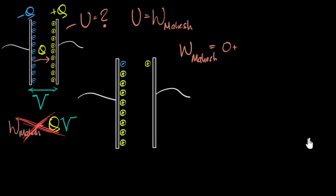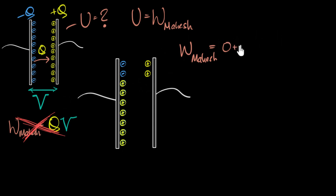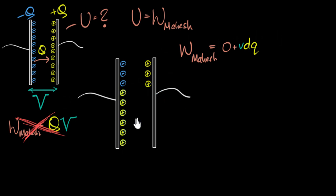Now let's move the second charge. When moving the second charge, I do have to do some work because I feel repulsion from the first charge. As a result of the charge separation, a tiny potential difference has been generated — really small, but it's there. So I have to do some work against that potential: the work done is that tiny potential difference times DQ. As I move the third charge, the potential difference has increased, making it even harder.